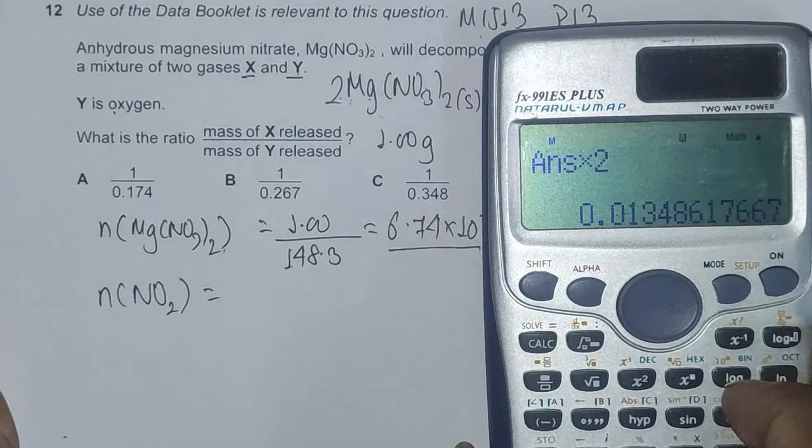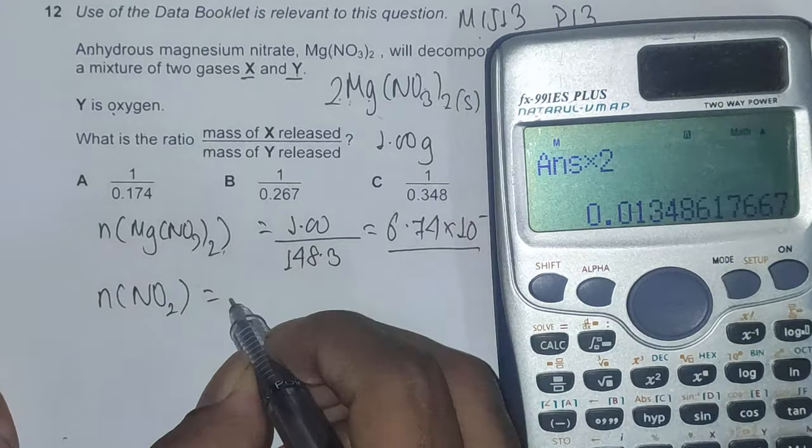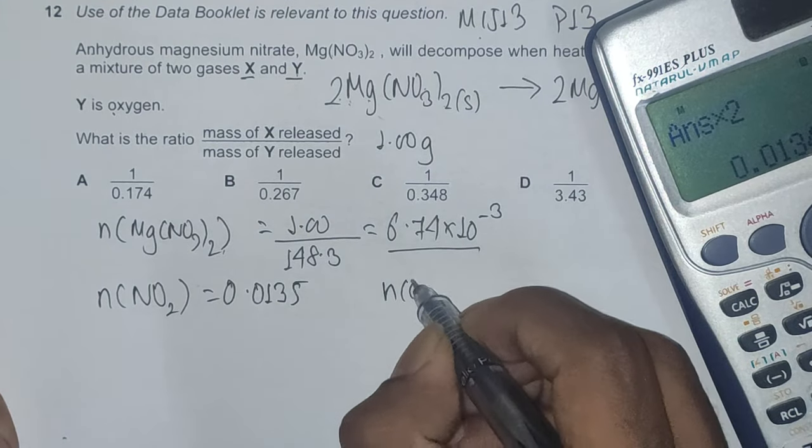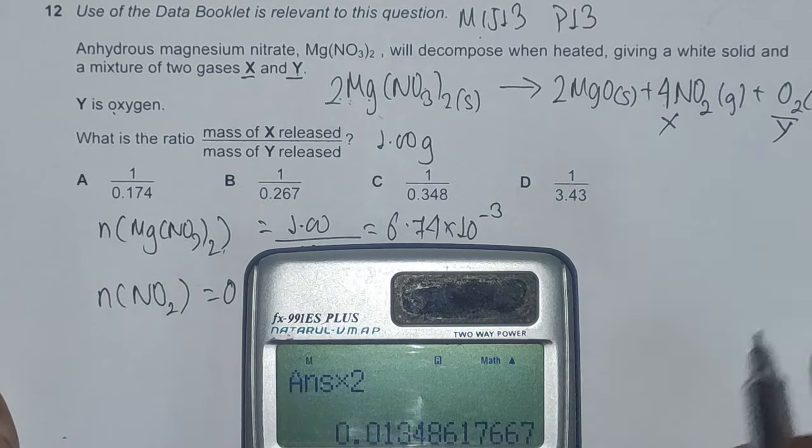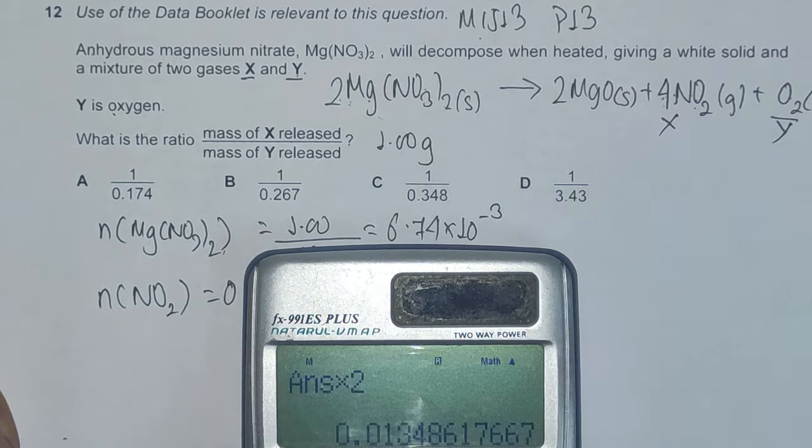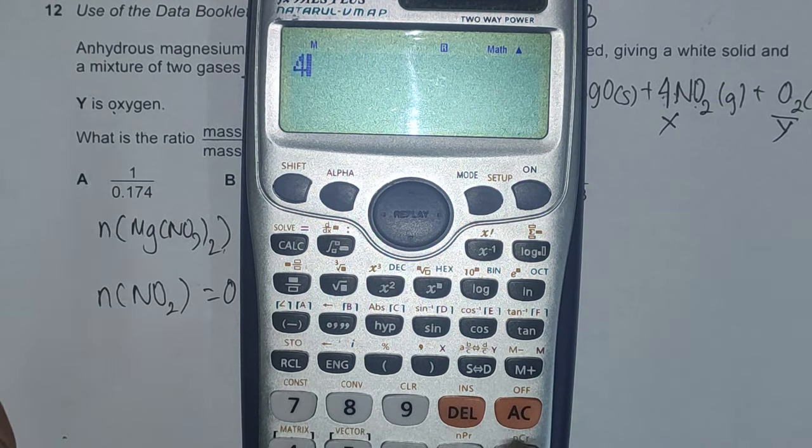Moles of nitrogen dioxide is 0.0135, and moles of oxygen is using the mole ratios: for every 4 moles of nitrogen dioxide formed we have 1 mole of oxygen formed. So we will just divide this by 4,